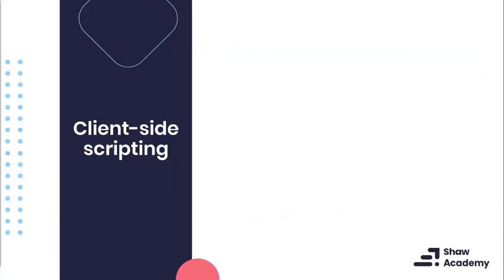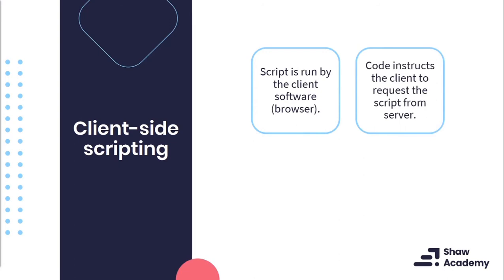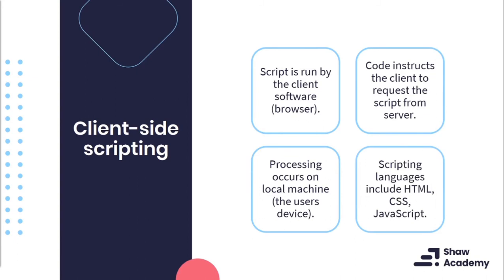Now that we better understand the difference between client side and server side, let's look at some core differences and the tools and scripting languages used on either side. In the client side scripting environment, the script is run by the client or browser software itself — your Chrome, Firefox, or Edge. The code instructs the client to make a request from the web server, the processing occurs on the local machine — the user's device — and this is essentially where all the interpretation and rendering happens. Scripting languages for the client side include HTML, CSS, and JavaScript.